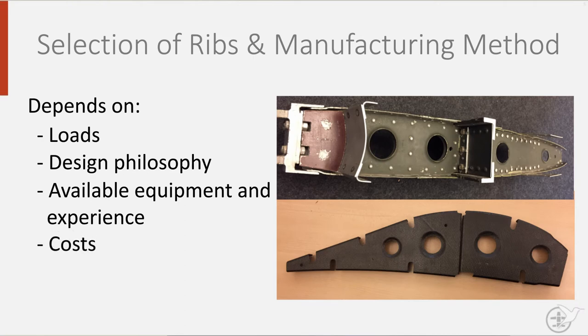That brings us to the fourth criterion: cost. At the end of the day, manufacturing aircraft or spacecraft is not a charitable activity. Cost must be minimized in order to stay competitive. Your design may offer the best solution on a micro scale, but may lead to an increase in cost on a larger scale. This depends on whether the benefits of your design weigh up against the cost of implementation. This answer is different every time, and is one of the reasons continuous optimization takes place in industry. It also explains why different companies will have different solutions for the same problem.